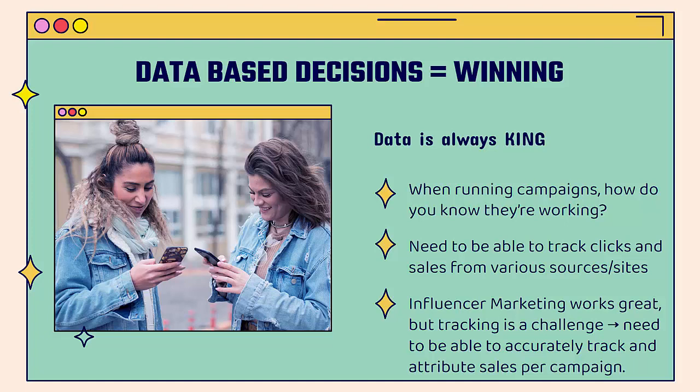The more data you have, the better you can make these decisions. When you're running campaigns, that's the number one thing you need to answer: is this campaign working or not? Am I going to scale this campaign? Am I going to cut this campaign? Am I going to continue this campaign? You need to be able to track clicks, sales that come in from various sources, various sites, various times. You could be getting traffic all at the same time and have to understand exactly where it's coming from.